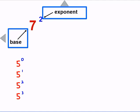Our base is the number that we're going to multiply by itself some number of times. So in this case we have a base of 7 raised to the exponent of 2, which means we're going to multiply 7 by itself 2 times. So 7 times 7 is equal to 49, and that is equal to 7 squared.